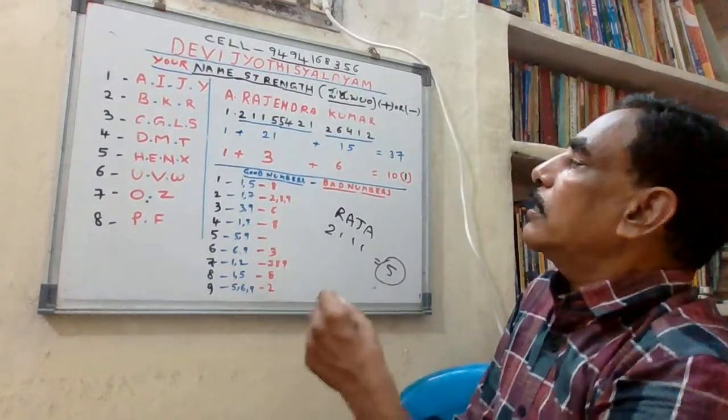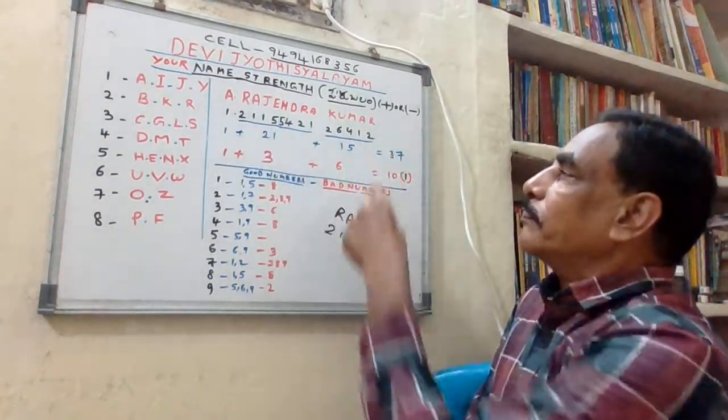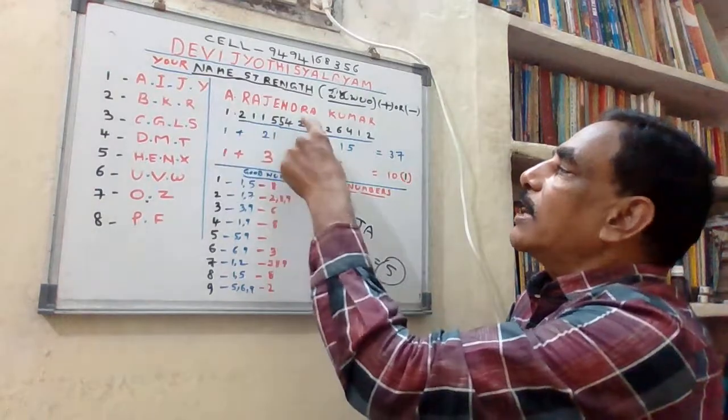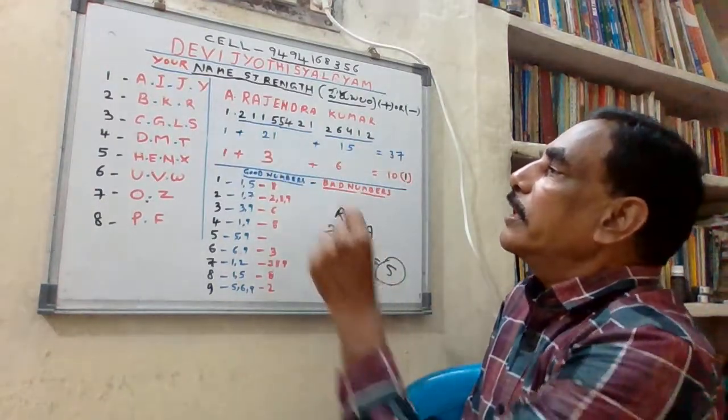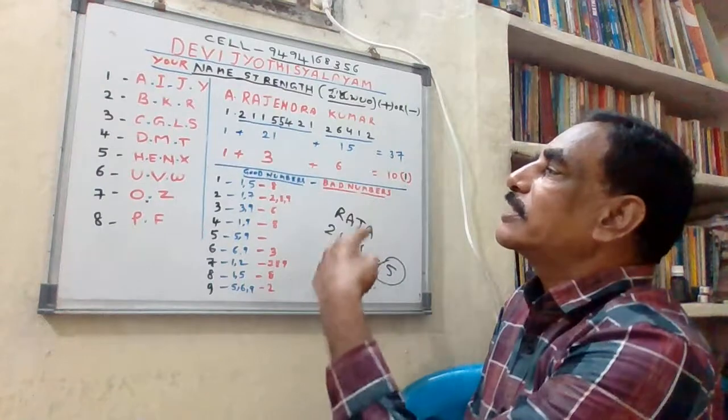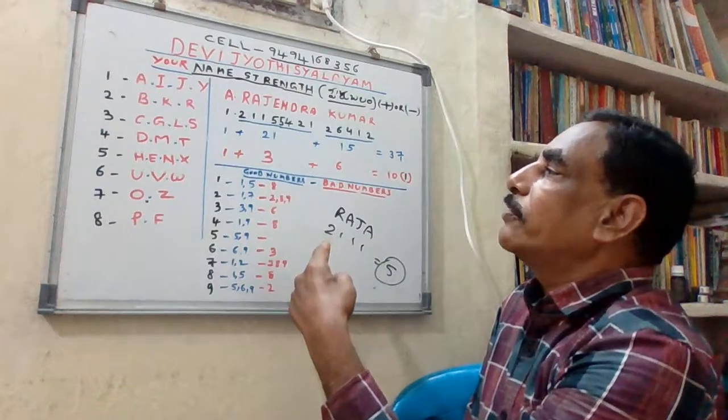First, I will start with my name. My name is A Rajendra Kumar. I will convert my name into name strength. That number I have to find out.